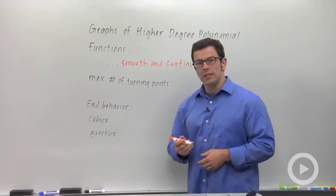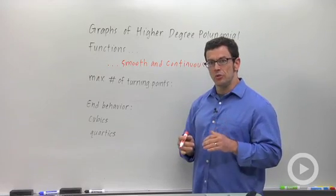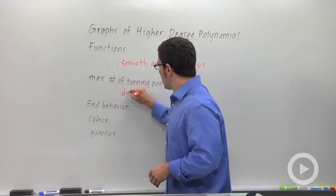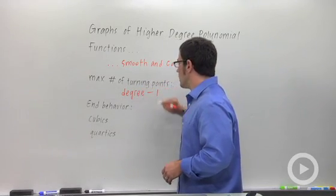Maximum number of turning points. Remember that the cubic had at most two, and the quartic had at most three. So it's going to be the degree of the polynomial minus one.